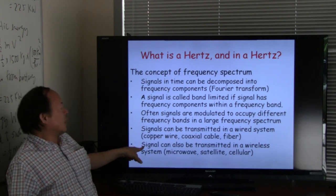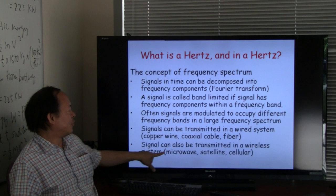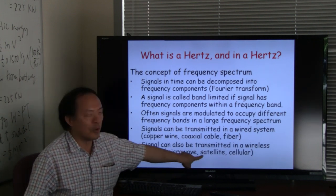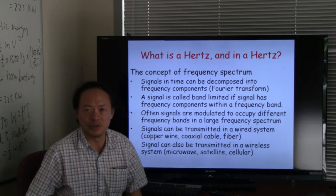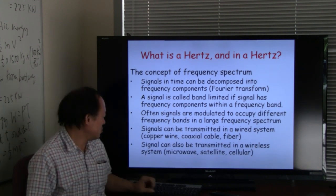On the other hand, you can also transmit the same signal in a wireless system, for example through a microwave transmission system, through a satellite communication system, or through a cellular communication system. So here we have a very basic notion of frequency and frequency band.